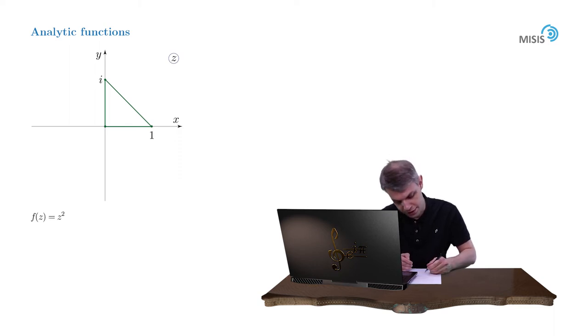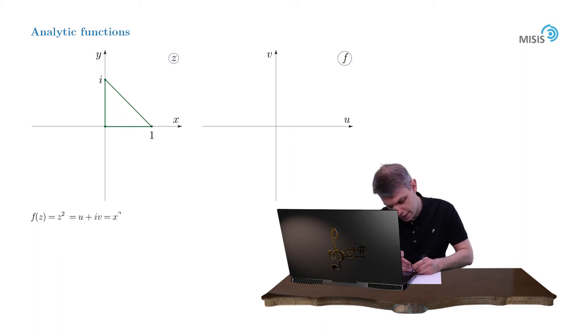Let us draw a domain of function f and let us split our holomorphic function into its real and imaginary part. f equals u plus iv which is x squared minus y squared plus 2i xy. So u equals x squared minus y squared while v equals 2xy.